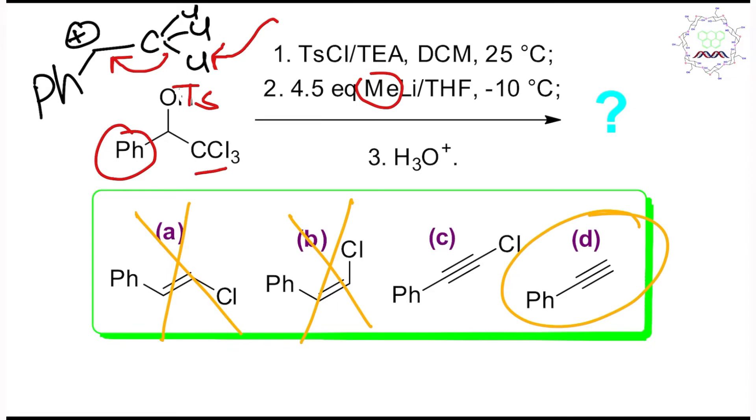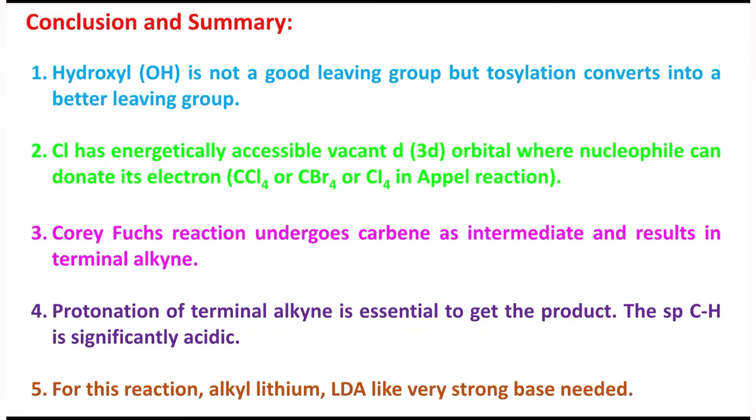Third step is that you need to know Corey-Fuchs reaction, which nucleophilic attack happens on this halogen and ultimately follows through carbene as carbene intermediate and produces terminal alkyne. So this option will not happen. In this case, student, knowledge is essential; no tricks work. Using trick, I can eliminate these two options, but here you should know.